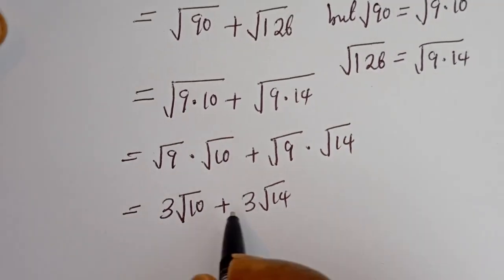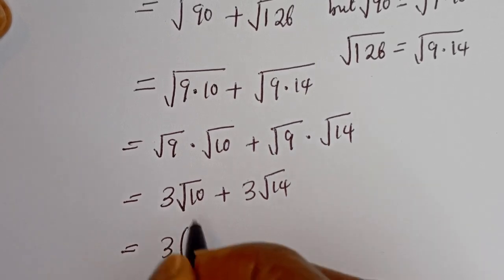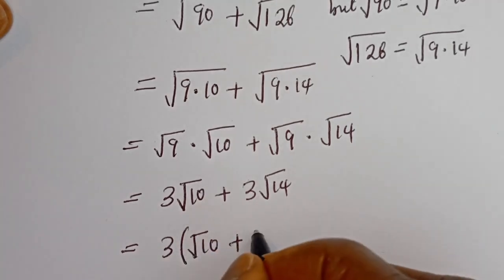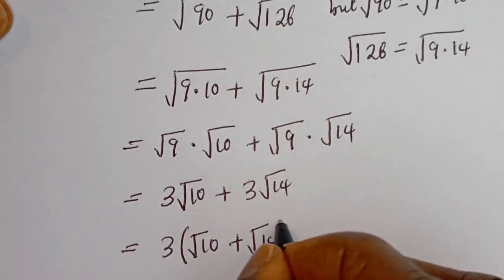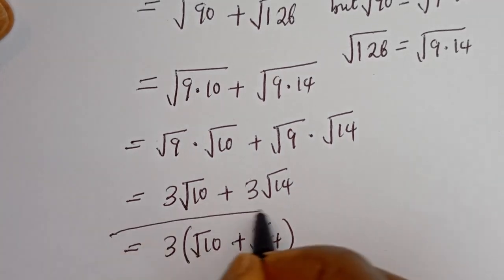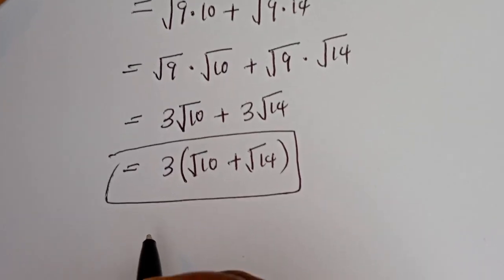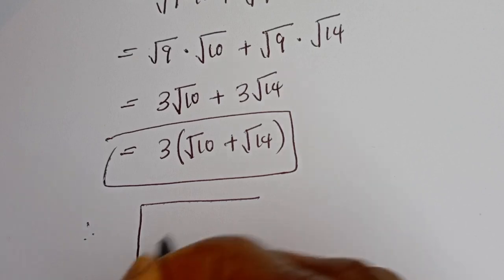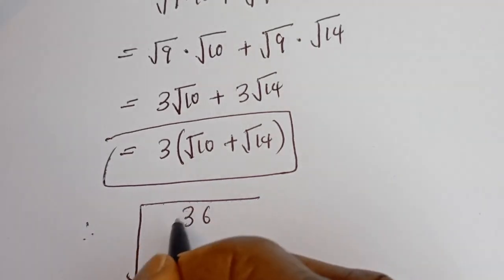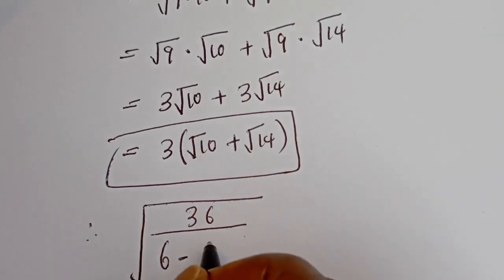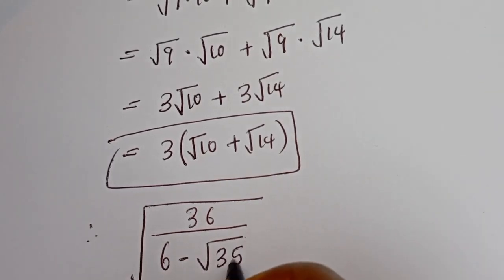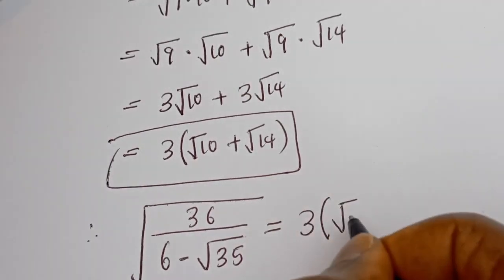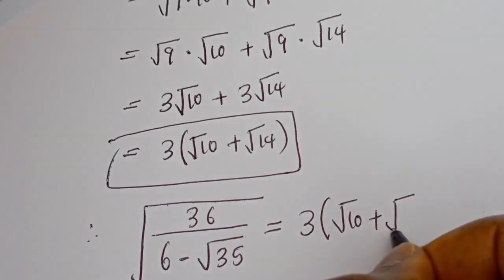And as you can see, 3 is common. This equals 3 bracket root 10 plus root 14. And this is the final answer. Therefore, square root of 36 divided by 6 minus square root of 35 is equal to 3 bracket square root of 10 plus square root of 14.